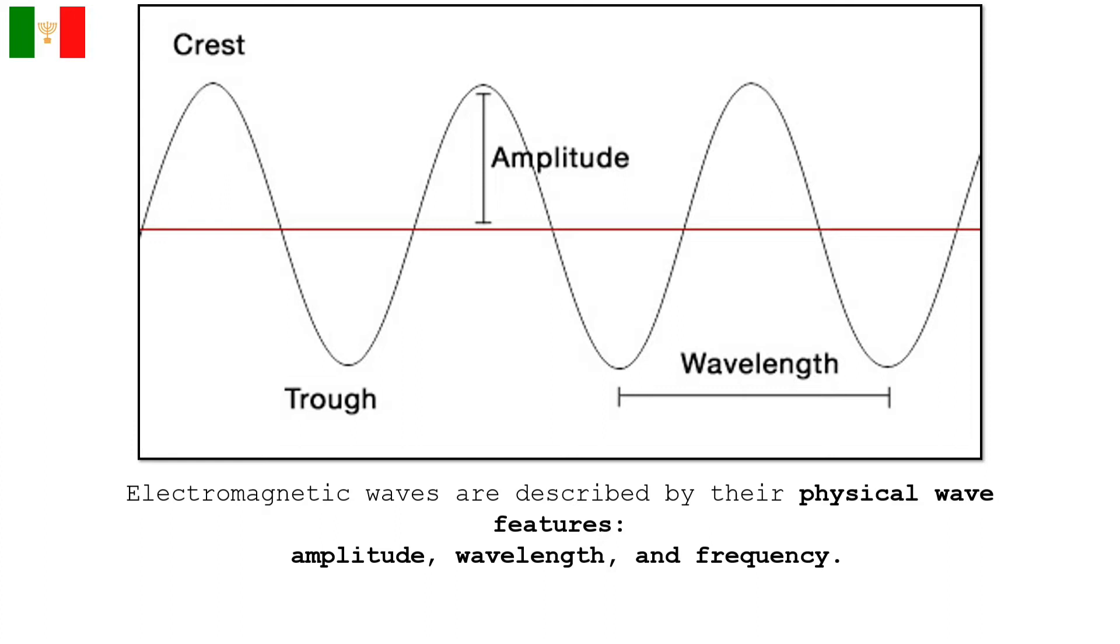Next is frequency. This is the number of waves that pass by per second. In the hertz measurement, it is abbreviated Hz. This is also the number of cycles or vibrations undergone during one unit of time by a body in periodic motion.